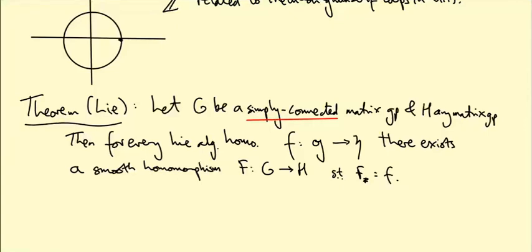So what does that mean? Let's get a new page. This is an idea from topology. It applies to things much more general than matrix groups. So a space X, this is going to be a topological space.